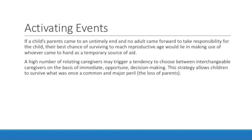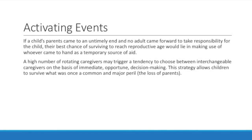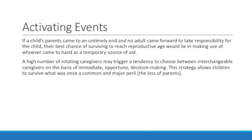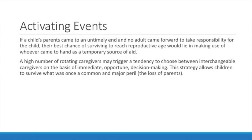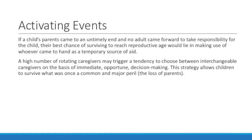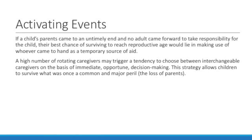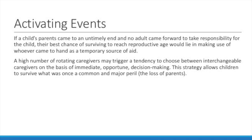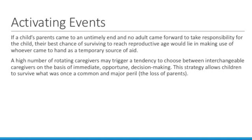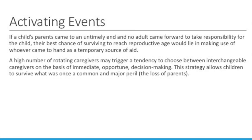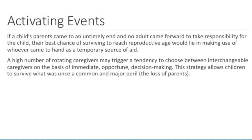If a child's parents came to an untimely end and no adult came forward to take responsibility for the child, their best chance of surviving to reach reproductive age would lie in making use of whoever came to hand as a temporary source of aid. There is little evidence that the adoption of unrelated individuals occurred with any frequency over most of human evolutionary history, which leads to the idea that evolution may have refined multiple-choice attachment behavior because it paid off. In modern-day conditions of orphanages and foster care, there are often a high number of caregivers rotating in and out of children's lives, which may trigger a tendency to choose between interchangeable caregivers on the basis of immediate, opportune decision-making.